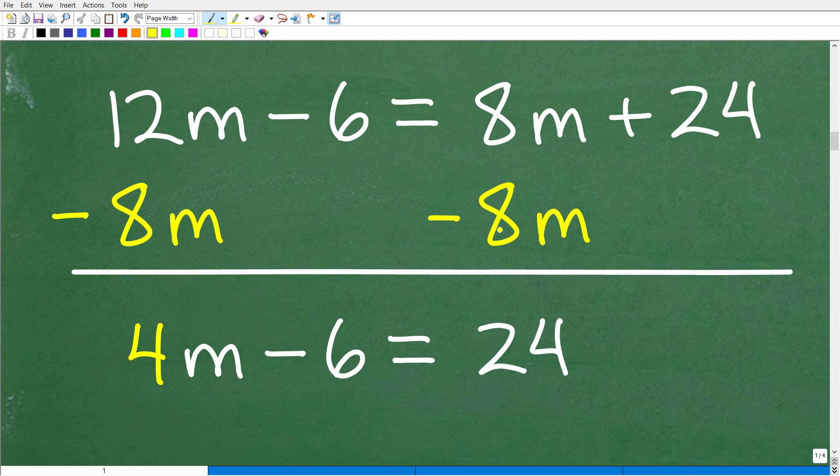Do not do that. One, your paper's not going to be as wide. You'll want to work in a vertical manner. All right, so at this point, we're going to move the variable term 8M. It's on the wrong side. We're going to move it over to the left-hand side.